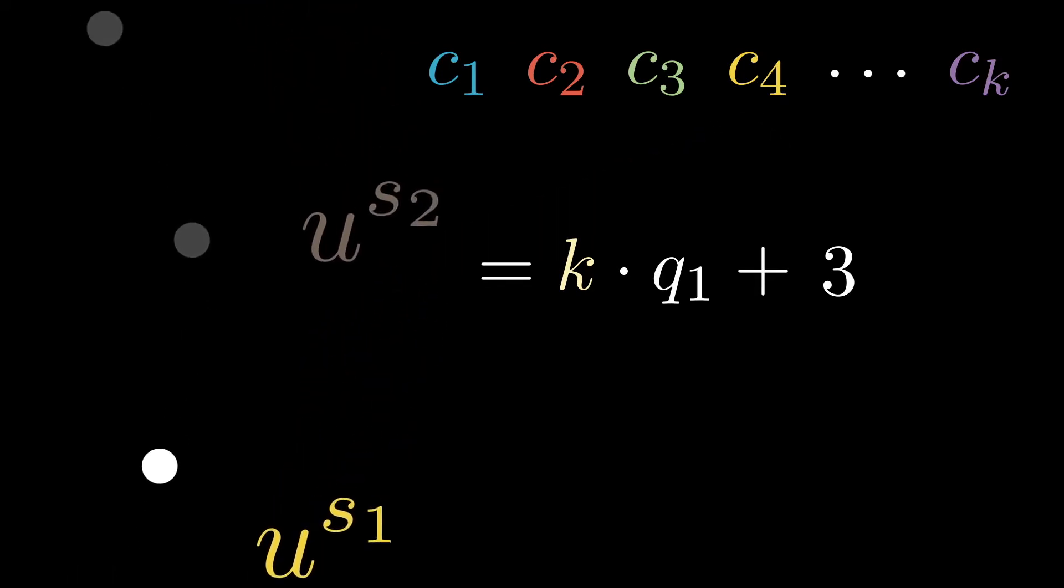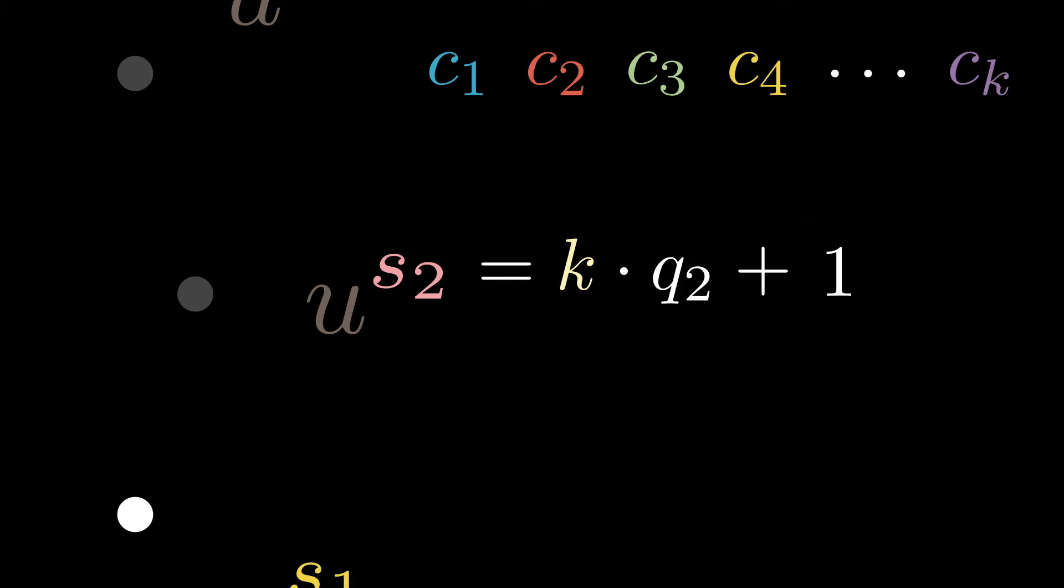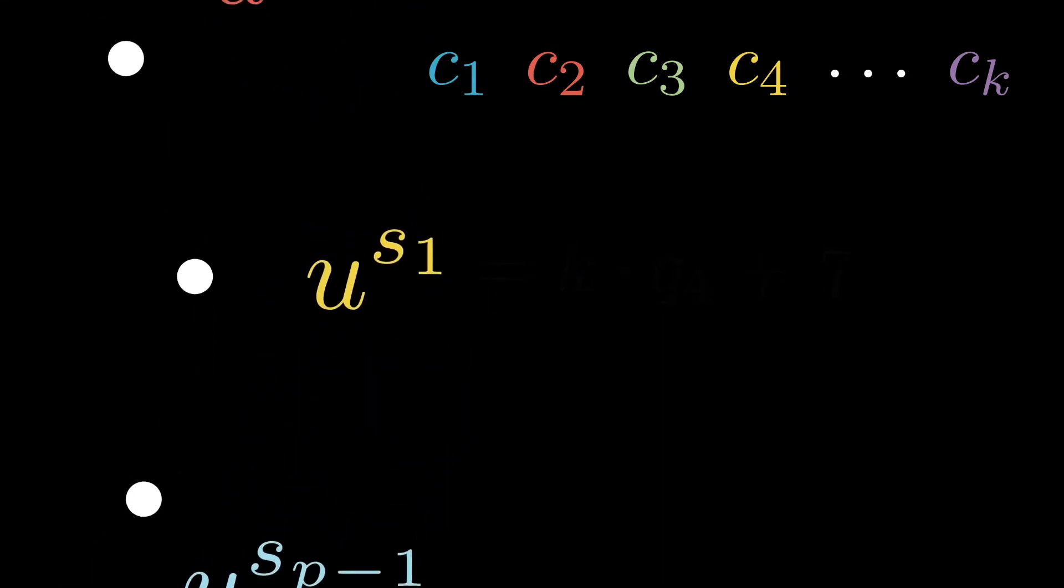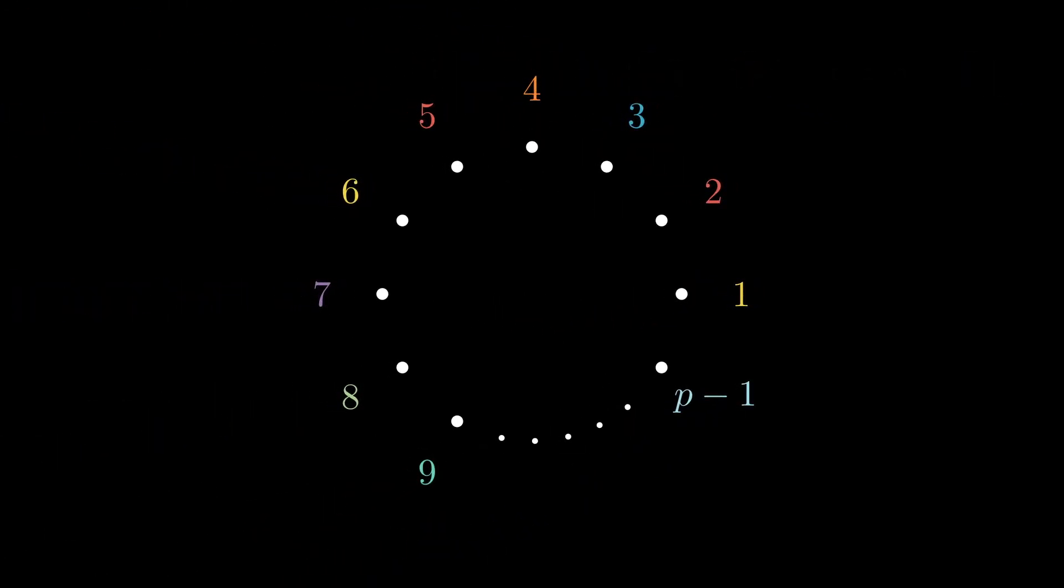Perhaps the next power has a remainder of 1, so we look up the relevant color and use it on that element. And we simply carry on in this manner, eventually coloring all the elements, which were just the numbers between 1 and P-1.